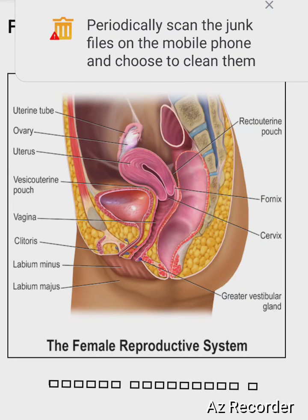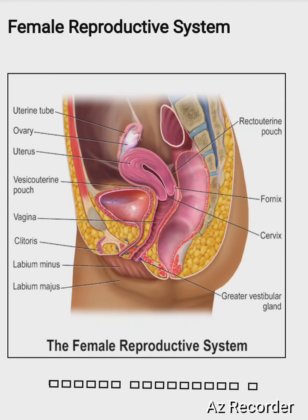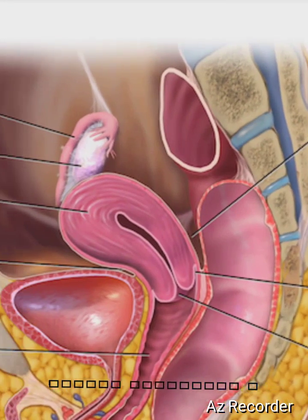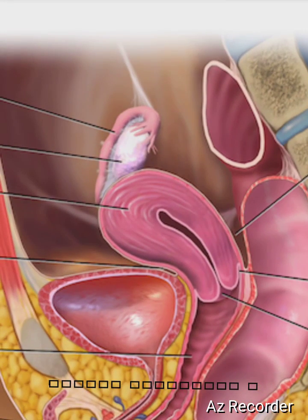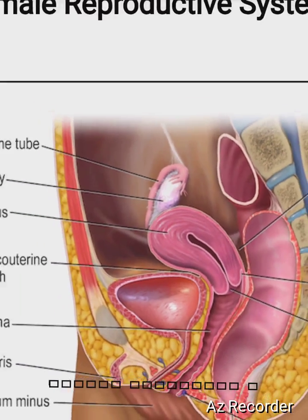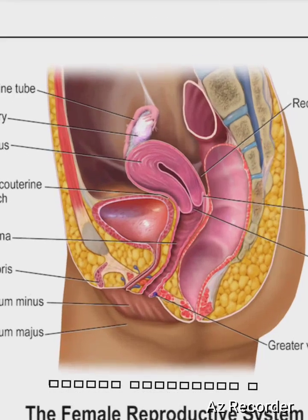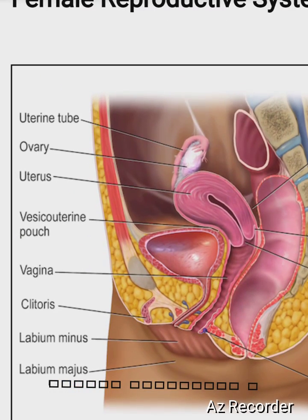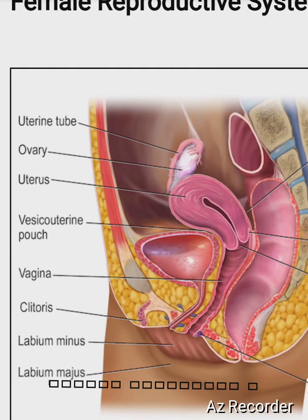Female reproductive system. The main parts of the female reproductive system: this part is called the Fallopian tubes, and the next part is called the ovary.